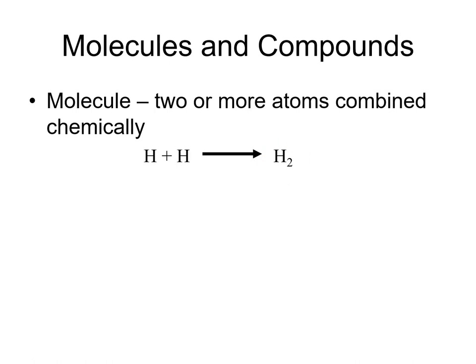We find hydrogen in the form of molecular hydrogen in the environment. There are not free hydrogen atoms roaming around. The hydrogen you breathe in is actually molecular hydrogen. Single atoms of hydrogen are unstable, and they combine with other hydrogen atoms to form molecular hydrogen. When we say combined chemically, we mean that a chemical bond has formed between the atoms.